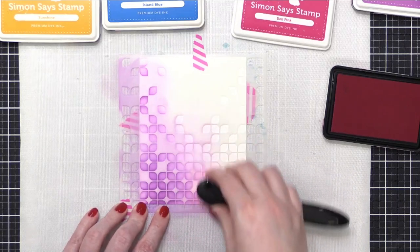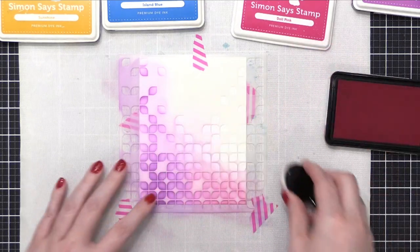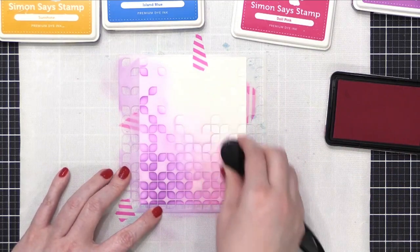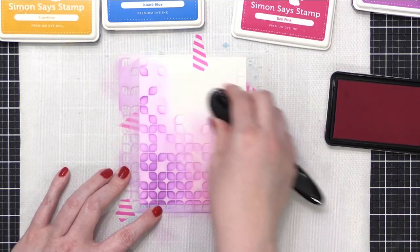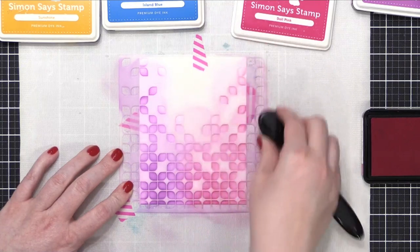So now I'm taking dull pink, and I'm blending in from the other side, letting the colors just blend in the center of the card. Really soft blending, and it doesn't take very long at all.